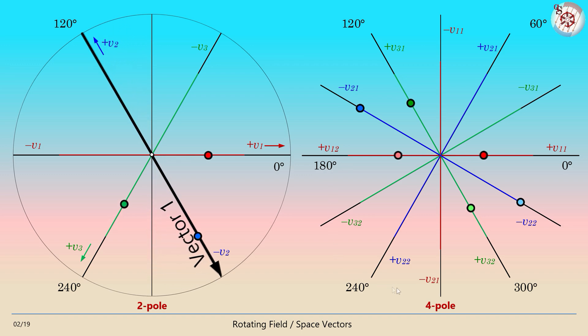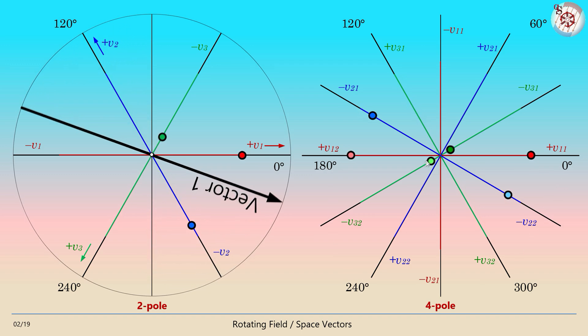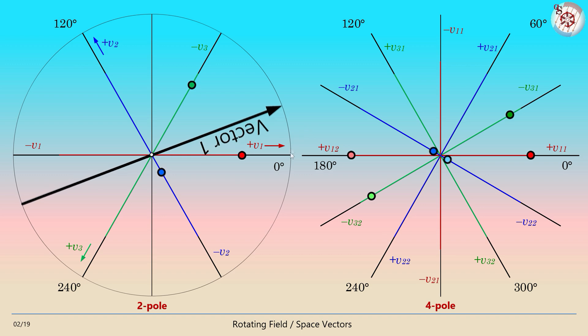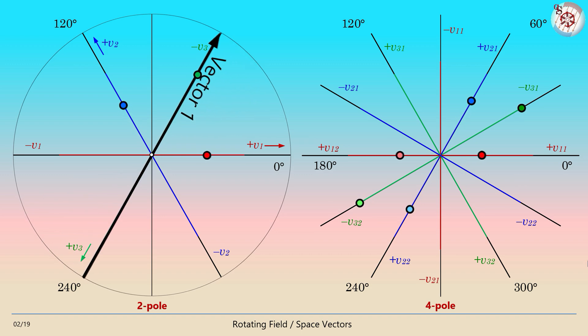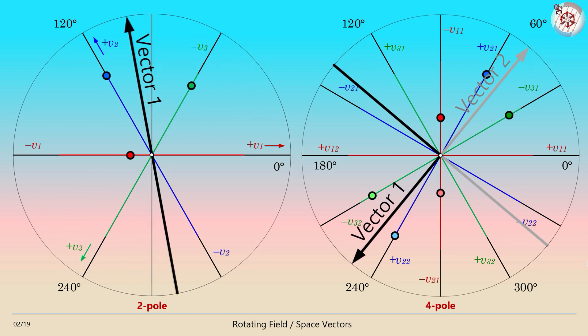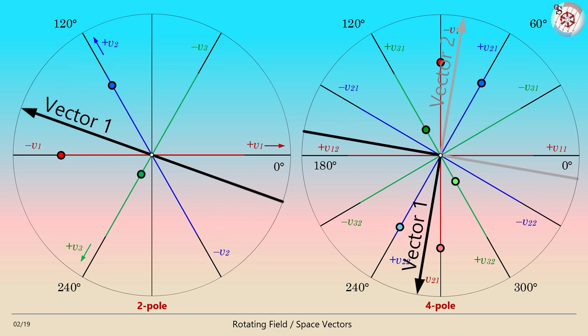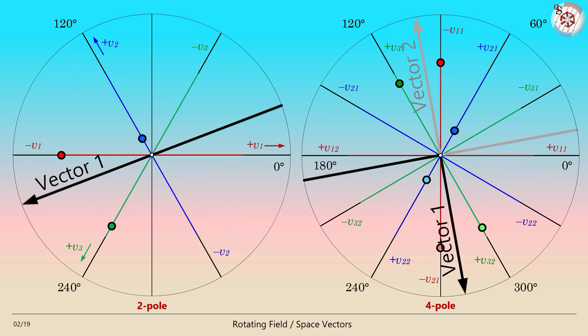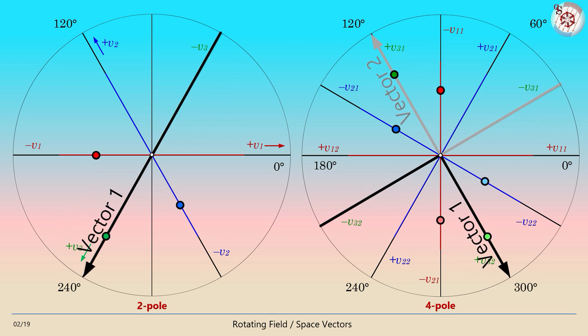Instead of having three voltage paths, we have six now. Because of that double usage, we get two voltage vectors. What is apparent at first sight: the vectors rotate slower now, half as fast to be exact.